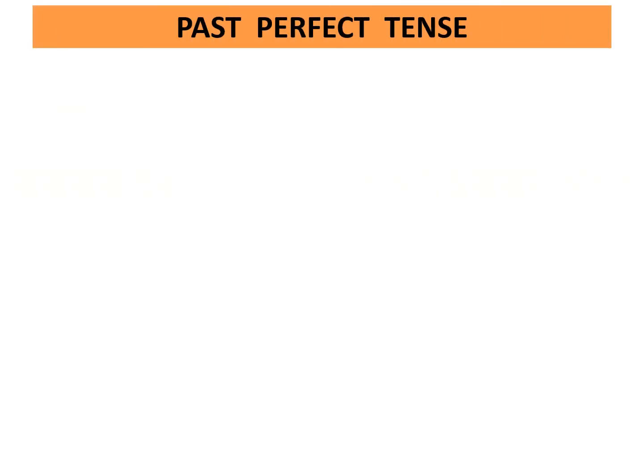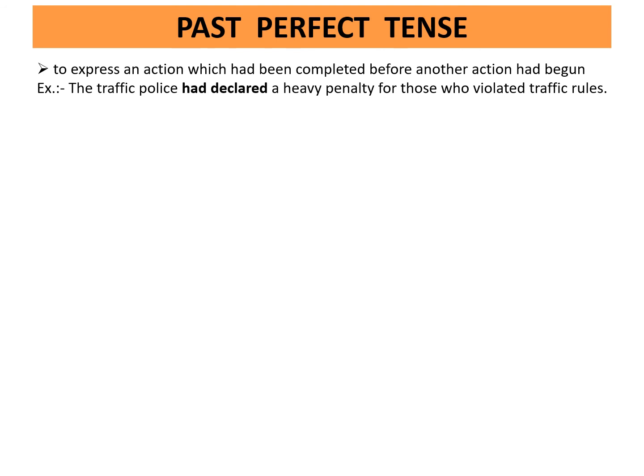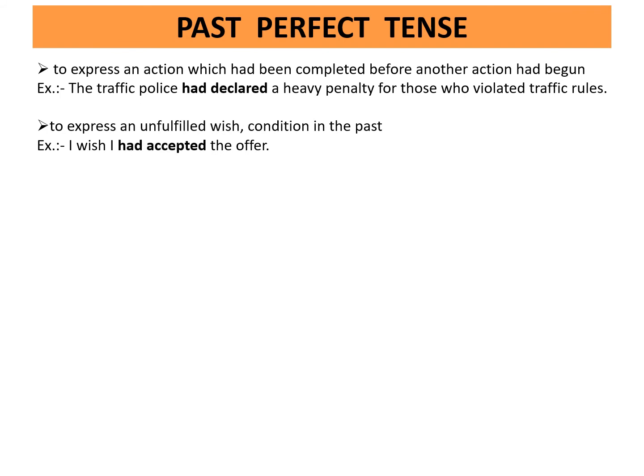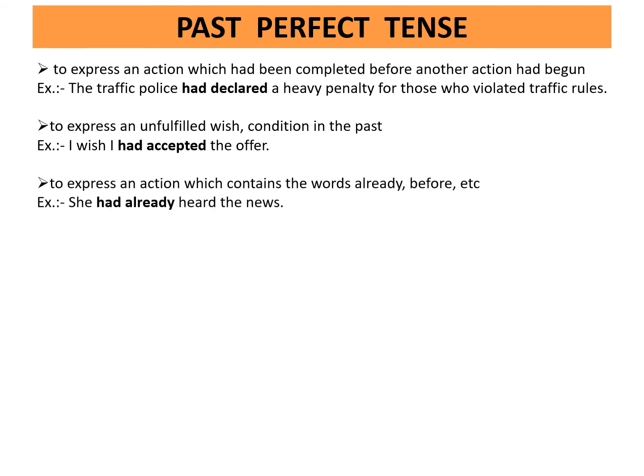Past perfect tense expresses an action which had been completed before another action had begun. Example: The traffic police had declared a heavy penalty for those who violated traffic rules. It also expresses an unfulfilled wish or condition in the past. Example: I wish I had accepted the offer. It also covers actions containing words like 'already' or 'before'. Example: She had already heard the news. Had is used with all subjects: he, she, it, name, I, you, we, they.